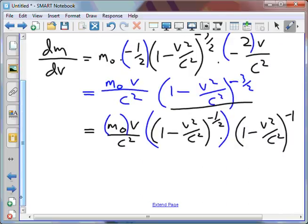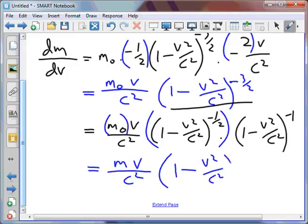And so I could replace all of that with m, v on c squared, times 1 minus v squared on c squared to the minus 1.